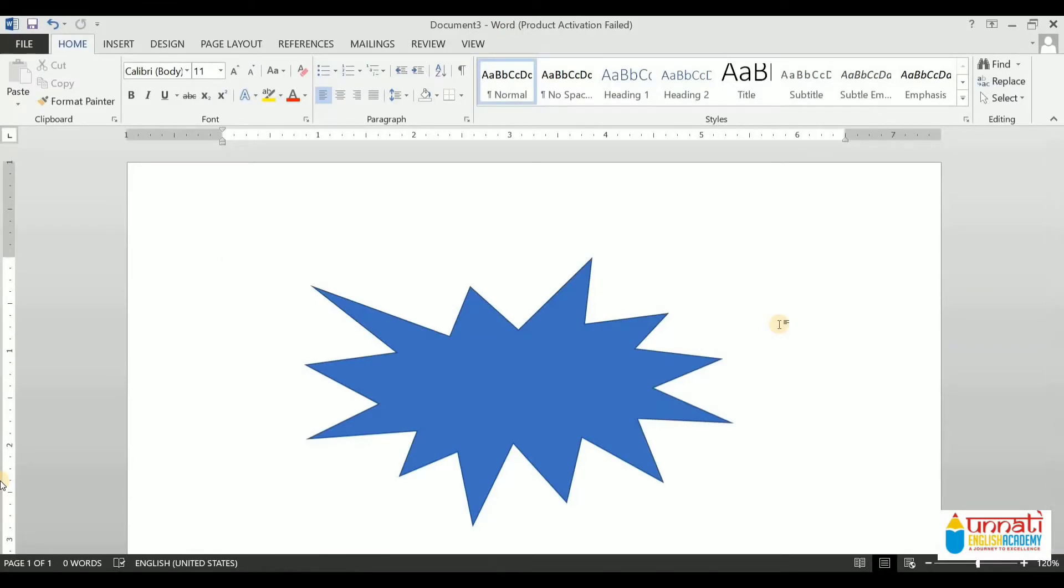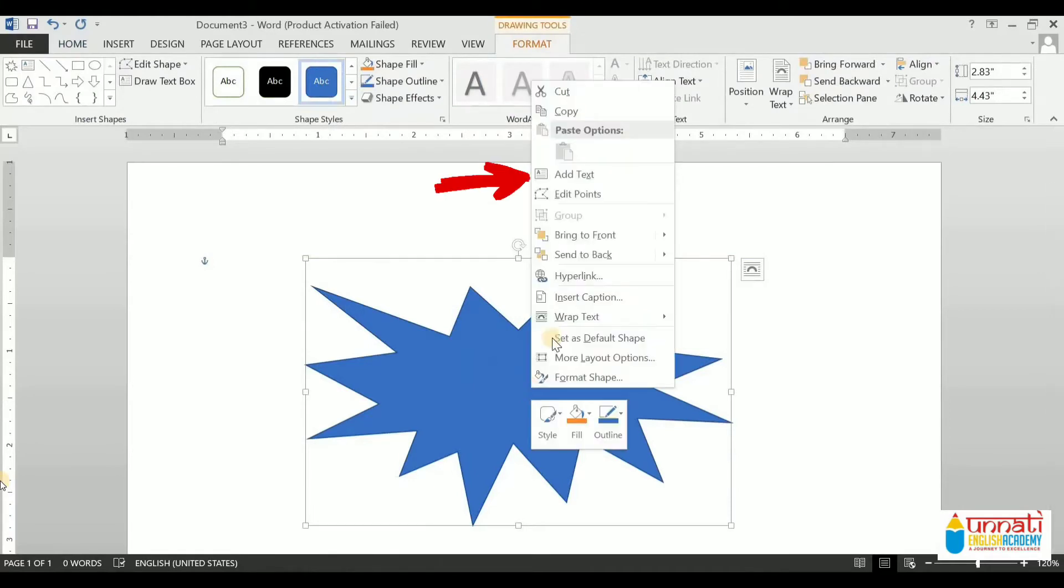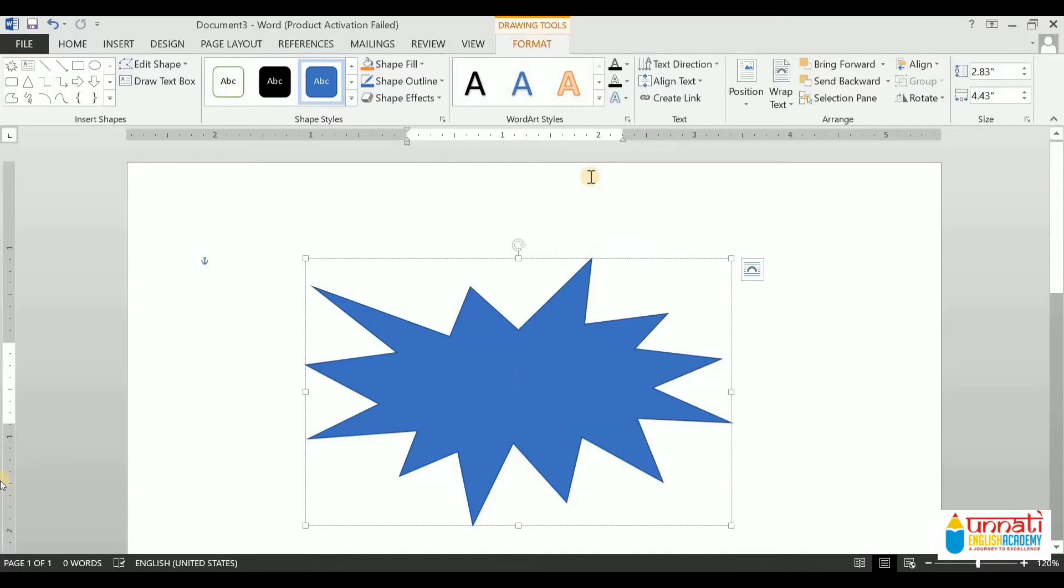Now is it possible to insert text in a shape? Yes, it is possible. You can use shapes for inserting text. Right click on the shape and choose the option Add Text from the shortcut menu. The insertion point appears in your shape. Now you can type the text.